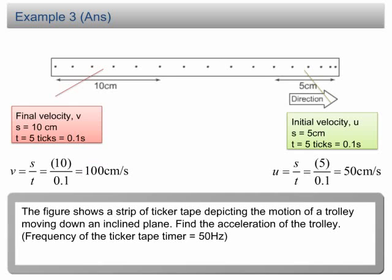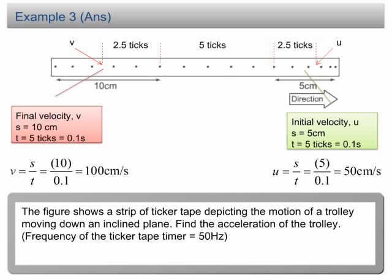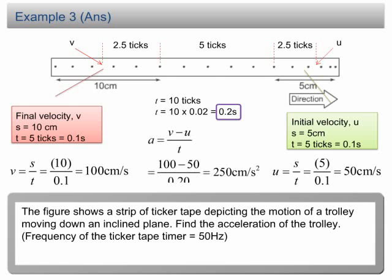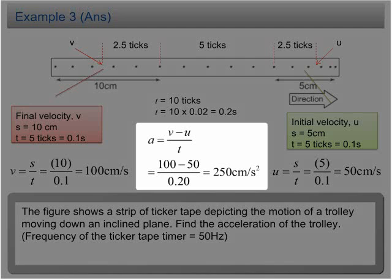Now it is time to find the time between u and v. Where are u and v? Since we used 5 ticks for our calculation of u and v, u and v must be in the middle of the 5-tick intervals, not in the middle of just two dots. Therefore, u is in the middle of the 5 cm interval, and v is in the middle of the 10 cm interval. After deciding the locations of u and v, we count the ticks between them — there are 10 ticks between u and v. Therefore, the time taken is 10 ticks or 0.2 seconds. Substituting the values of u and v, the acceleration is 250 cm/s².